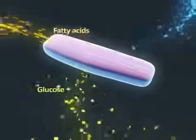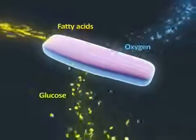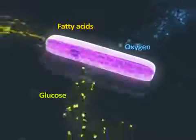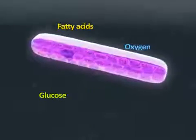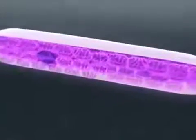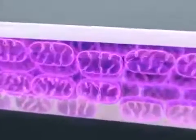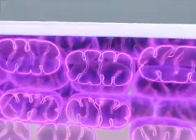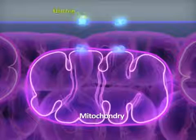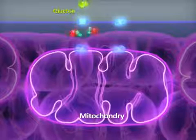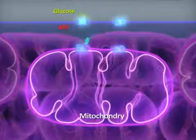In each cell, there are several small power plants — mitochondria — that have a central role in the generation of energy. Their main function is to synthesize the organism's universal energy carrier, ATP, by oxidating glucose and fatty acids.